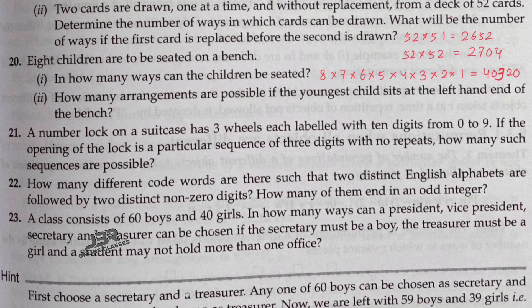Number 2: How many arrangements are possible if the youngest child sits at the left hand end of the bench? The youngest child's position is fixed, so the remaining seven children can be arranged in 7! = 7 × 6 × 5 × 4 × 3 × 2 × 1 = 5,040 ways. In the next video we will discuss sum numbers 21 to 25.